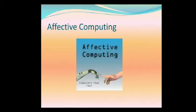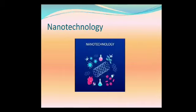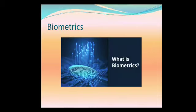Affective computing is the study and development of systems and devices that can recognize, process, and simulate human affect. Nanotechnology is being used in developing countries to help treat disease and prevent health issues. Biometrics is a technical term for body measurement and calculation. It is used in computer science as a form of identification and access control.